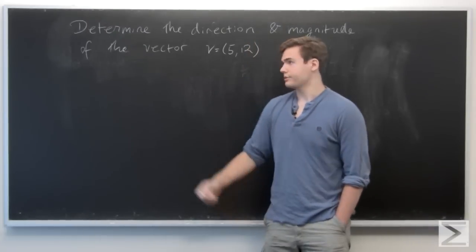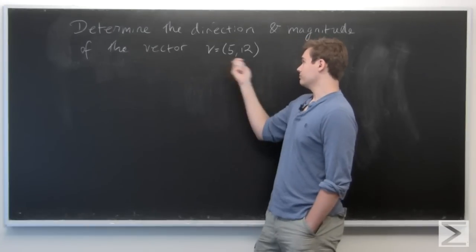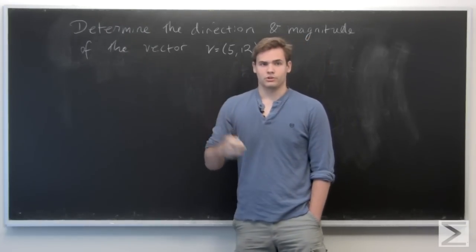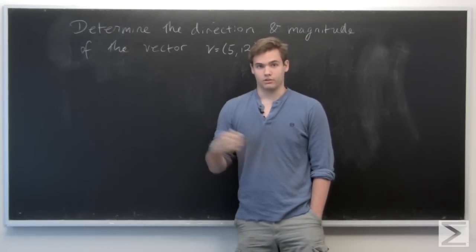The problem we have here is that we're given this vector (5,12) in R2, and we want to determine what its magnitude is and the direction of the vector.